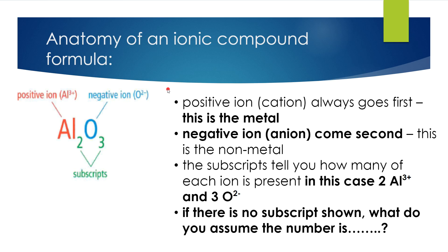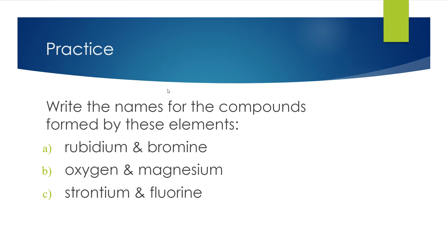The positive cation always goes first — this is the metal. The negative anion comes second — this is the non-metal. Subscripts tell you how many of each is present: in this case, two Al³⁺ and three O²⁻. If there is no subscript, you assume the number is one.